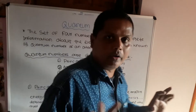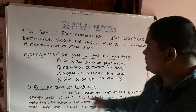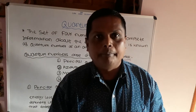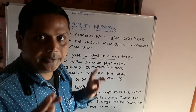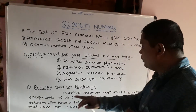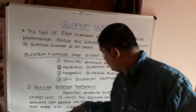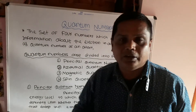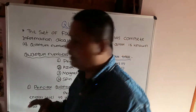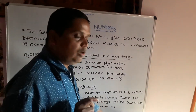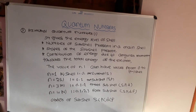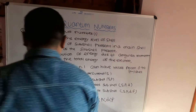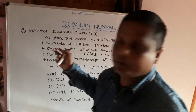The principal quantum number n is the major energy level to which the electron belongs. n can be equal to one, two, three, and so on, depending upon whether the electrons belong to the first, second, or third energy levels. These correspond to K (n=1), L (n=2), and M (n=3) shells.